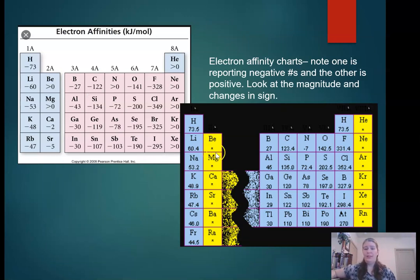Here are two electron affinity charts, just because I wanted you to see that you do see them both as positive and negative numbers. So you're really going to have to look at the magnitude and look at changes in sign. You can see that the larger magnitude numbers, whether I have them as being positive or negative numbers, are over here where I would expect to be forming negative ions. My smaller or even positive or not even reported numbers are here where I would expect to be getting cations, losing electrons rather than gaining electrons.